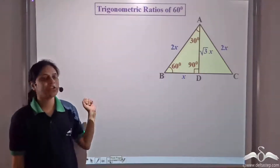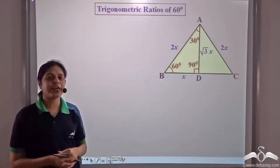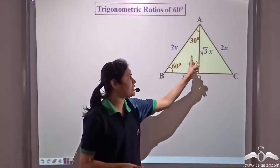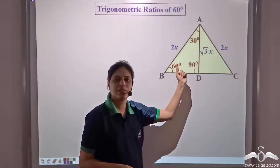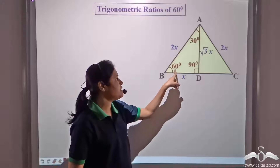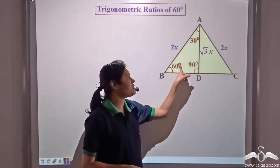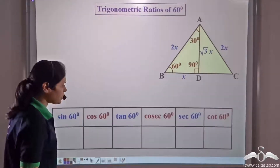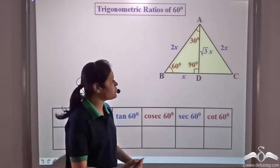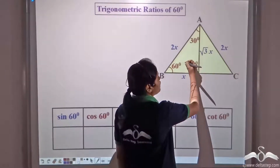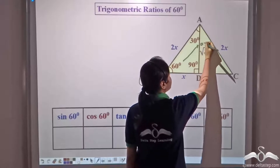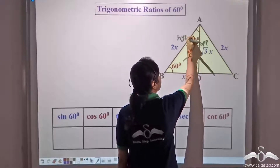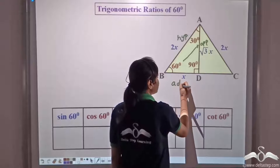Now let us find the trigonometric ratios corresponding to angle 60 degree. We already have a 60 degree angle in the same diagram, and we know all the sides in terms of x. For 60 degree, the opposite side is AD (√3·x), the hypotenuse is AB (2x), and the adjacent side is BD (x).